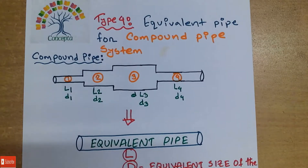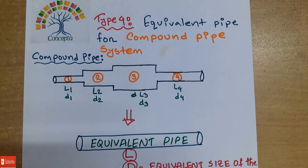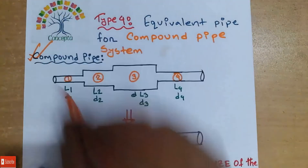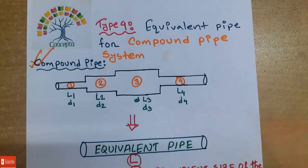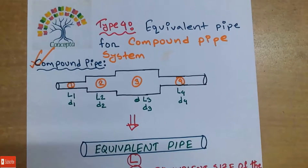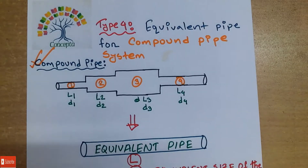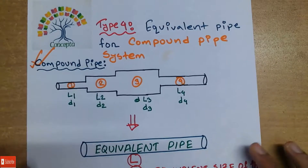In this tutorial, we did the same work, but it was different. In this tutorial, we had a compound pipe. This is the compound pipe. So, we had a different length of the equivalent pipe. This is the expression derived from the compound pipe — this is the compound pipe system.